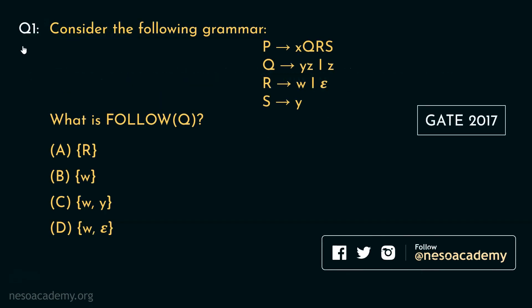Observe the first question. Consider the following grammar. These are the production rules given, and we are to find out what is the follow of Q. There are four options given, so let's try to solve it.